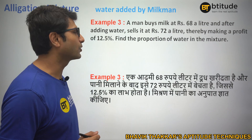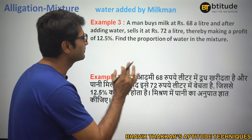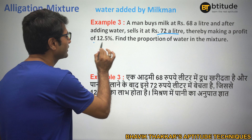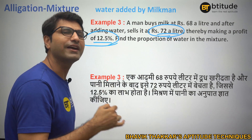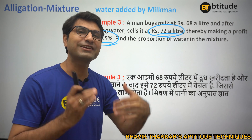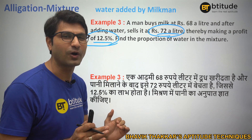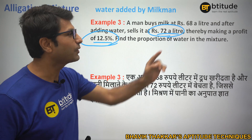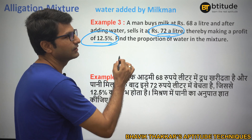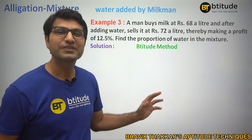Next question — the selling price is different this time, and we are also given the profit. Since we have the selling price and the profit percentage, we can find the cost price. The actual cost has changed because of the water added. Selling price is given, profit percentage is given. If profit is 1/8, then the ratio is: cost = 8, profit = 1, selling price = 9. So profit is one-ninth of selling price. If selling price is 72, one-ninth of 72 is 8, so cost is 64.